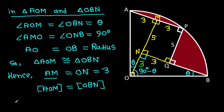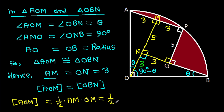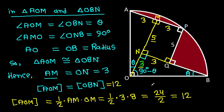Area of triangle AOM equals area of triangle OBN, which is one-half times base AM times height OM. That is one-half times 3 times (5 minus 3), which equals one-half times 3 times 2, giving 12 over 2, which is 12. So this area is 12 and this area is also 12.